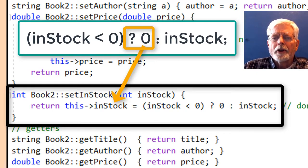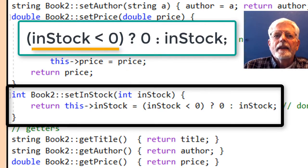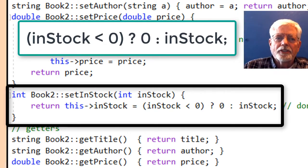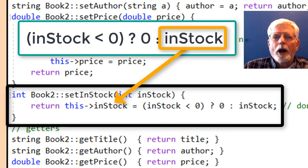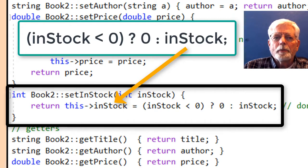then the assignment operator equals places a 0 into the object's in-stock member variable. If the condition i less than 0 is false, then a positive number was passed to the in-stock method. When the conditional operator test is false, the value after the colon is used.